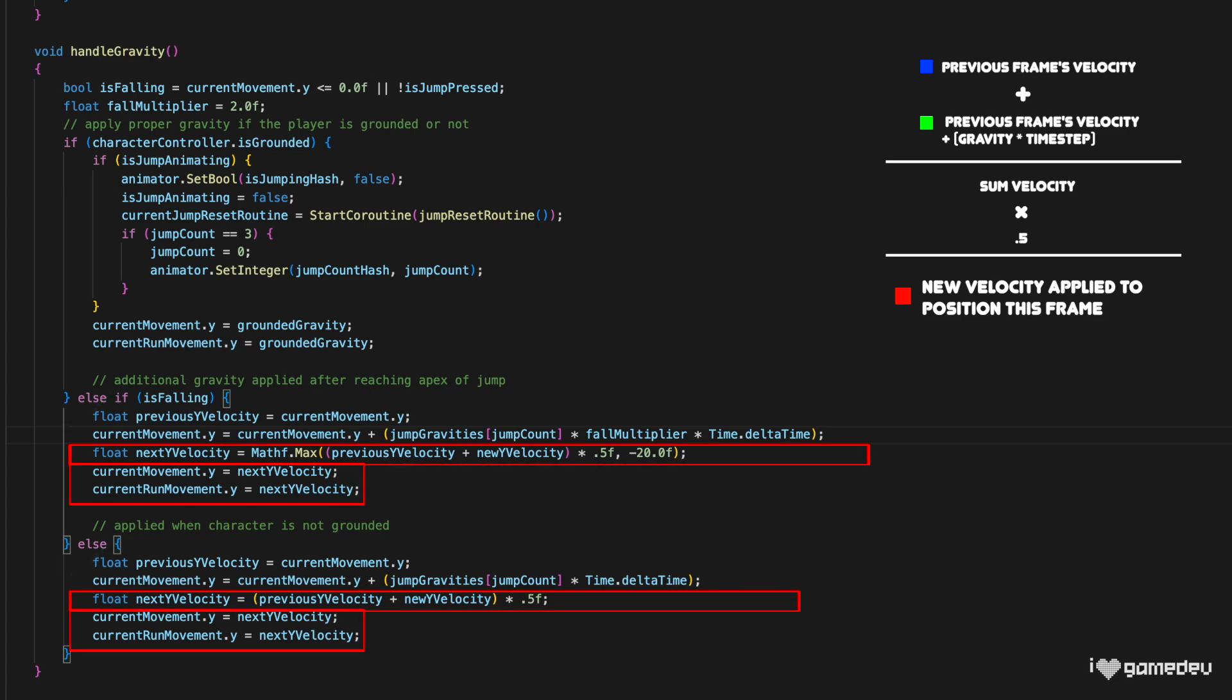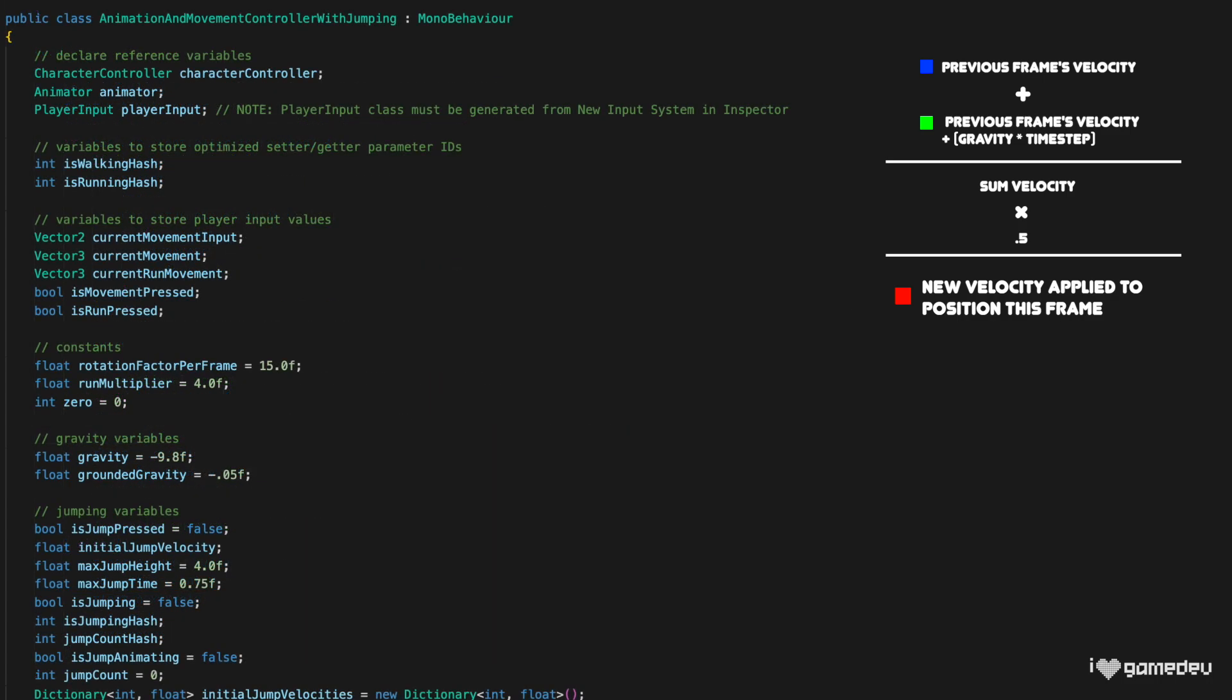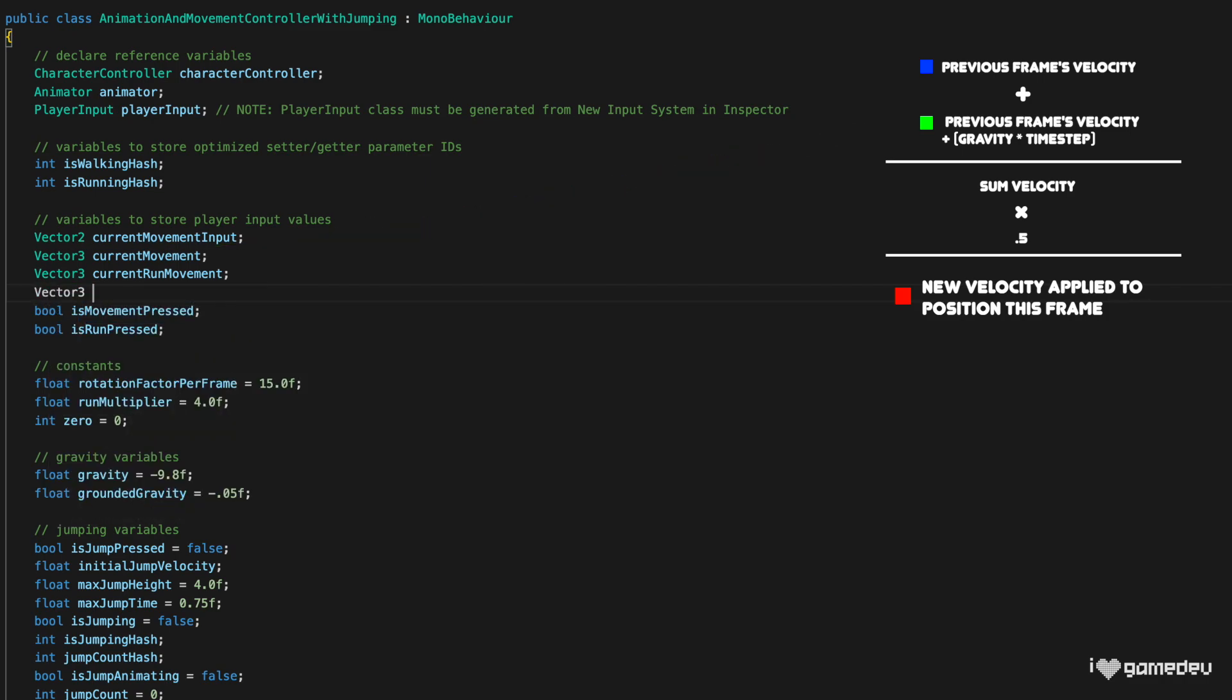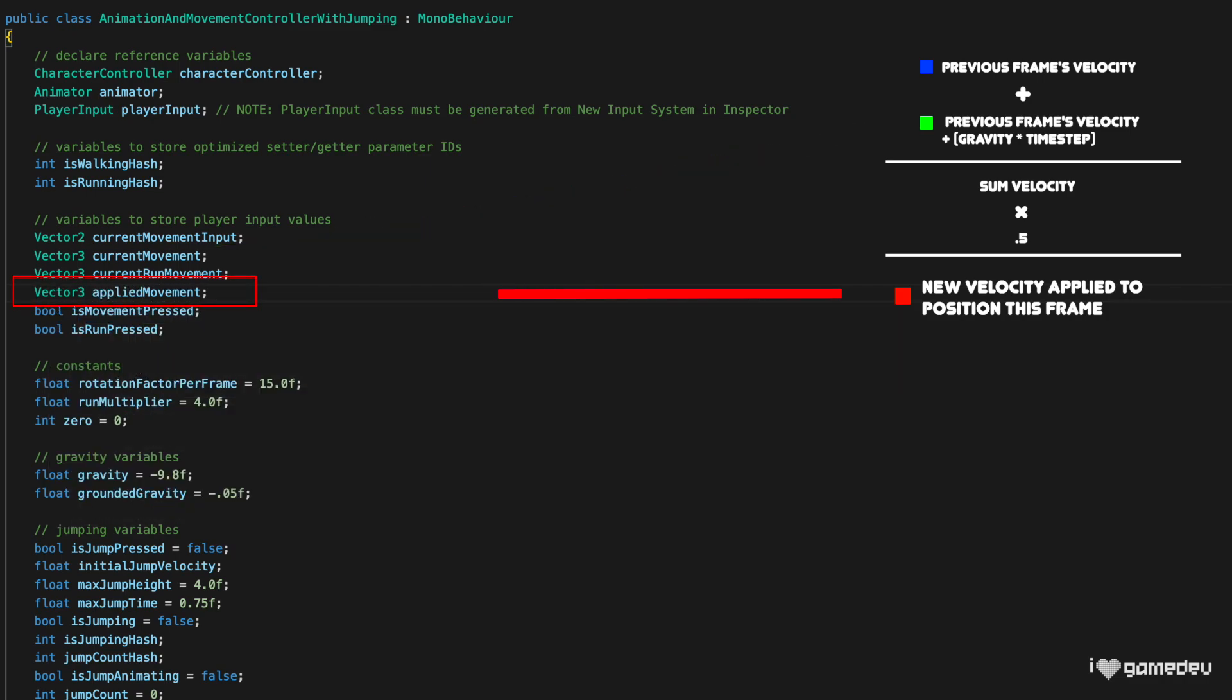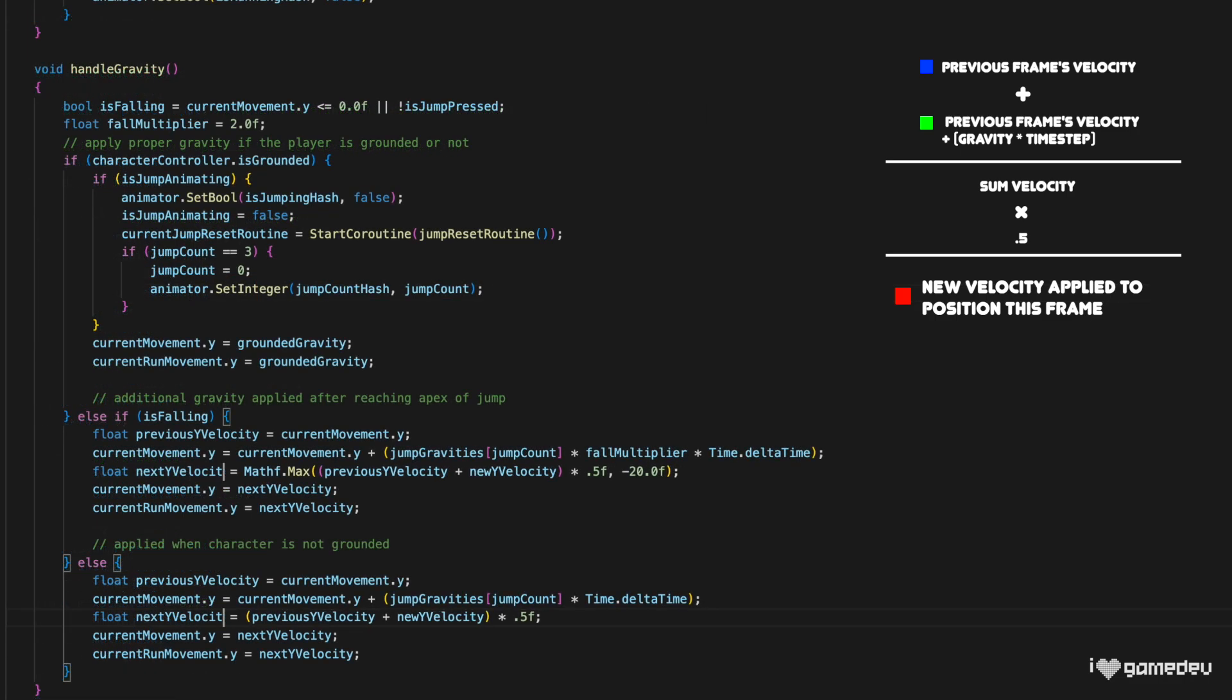But now, we need to set the average of these velocities to a new variable. And remember, this is the one that needs to be applied to our movement in the character controller's move function, so it has to be defined within the class and not the method. At the very top of this file, we have our currentMovement and currentRunMovement vector3 variables. Here, we'll create a third vector3 titled AppliedMovement.